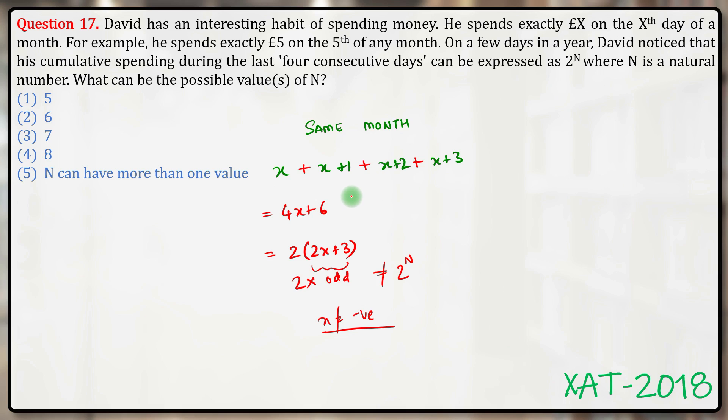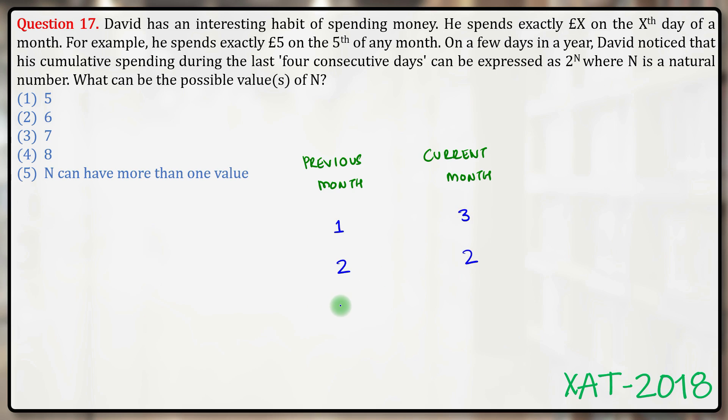the same month. That means there are two months involved. If there are two months involved, we can make three cases. Either one date was from the previous month and three dates from the current month, or two from the previous and two from the current, or three from the previous month and one from the current month.